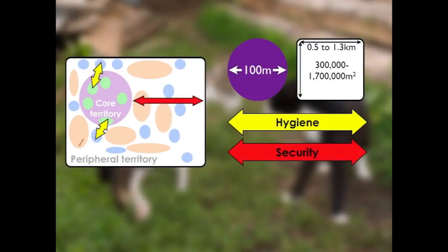Cats also try to optimise security. Although on this diagram it looks like the core territory is very close to the boundary of the peripheral territory, it might be more than 100 metres distance. What we would normally expect is that the peripheral territory boundary is beyond the visual distance of the cat. So while it's in its core territory, it wouldn't expect to be able to see another cat that is not part of its group — a potential neighbour or competitor. Within the core territory, cats don't expect to even see cats from other groups.